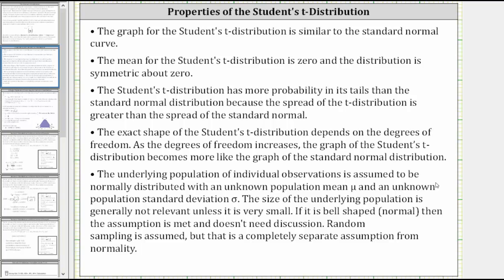The underlying population of individual observations is assumed to be normally distributed with an unknown population mean and an unknown population standard deviation σ. The size of the underlying population is generally not relevant unless it is very small. If it is bell-shaped or normal, then the assumption is met and does not need discussion. Random sampling is assumed, but that is a completely separate assumption from normality.